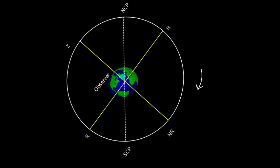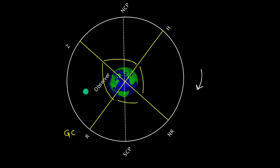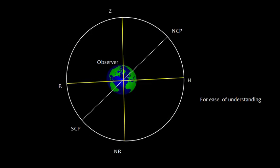Now let us have the observer-centric system. We have an observer here, and the point which is vertically above the observer is called zenith. A point which is 180 degrees away is called nadir. So zenith and nadir are 180 degrees apart. There is a great circle here passing through the center of the earth, and all points are 90 degrees away from the zenith and nadir. This is the rational horizon. Turning the diagram, you can figure out that this is the zenith, this is nadir, this is the rational horizon, and the observer is here.